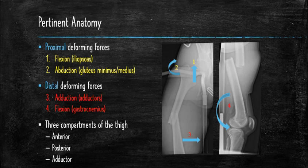There are three compartments to the thigh: anterior, posterior, and adductor. The anterior compartment comprises the sartorius and the quadriceps muscles. The posterior compartment consists of the biceps femoris, semitendinosus, and semimembranosus. The adductor compartment consists of the gracilis, adductor longus, adductor brevis, and adductor magnus.